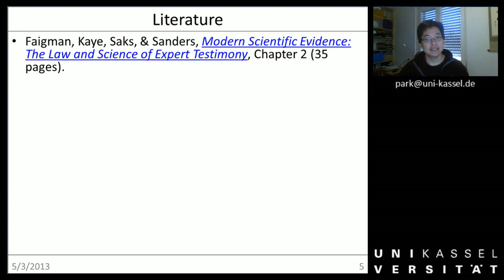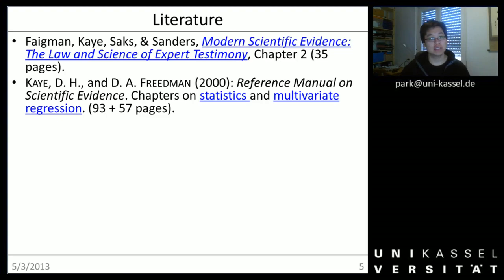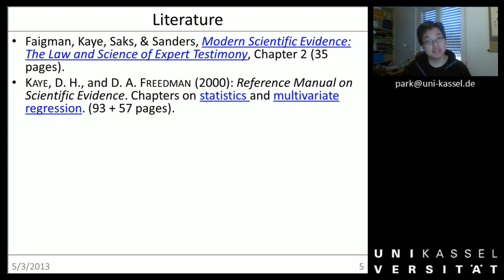This source is specifically written with law experts in mind. As soon as we get into the actual statistics and regression analysis, I will mostly be referring to these two sources. The overall book is like a lexicon — it's called the Reference Manual on Scientific Evidence. It is a huge work which is the standard source for US judges when they are confronted with empirical evidence in court. Specifically, I have uploaded for you the two chapters on statistics for the basics and multivariate regression.